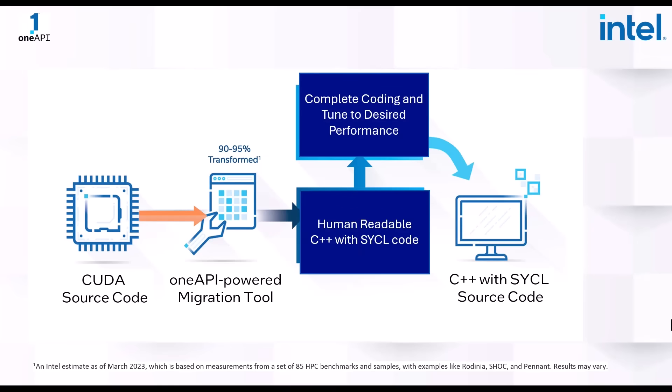The OneAPI-powered migration tool enables automating migration of CUDA source code to cross-platform-supported C++ with SYCL code in a few simple steps. It migrates the majority of the CUDA code to human-readable C++ with SYCL code. The diagnostic errors and warnings that the tool provides help you tune the migrated output, ensuring functional correctness of the SYCL code.